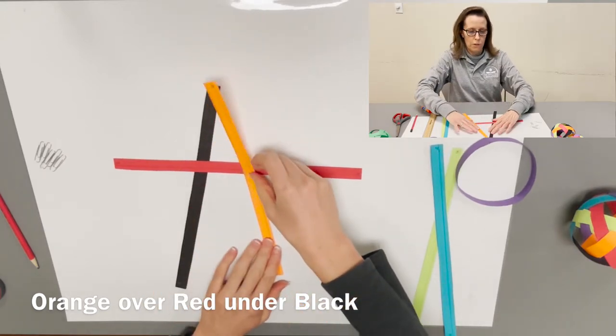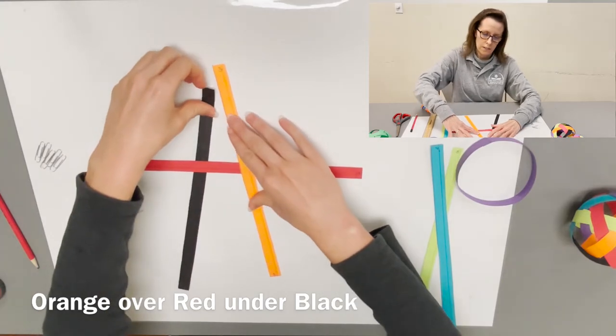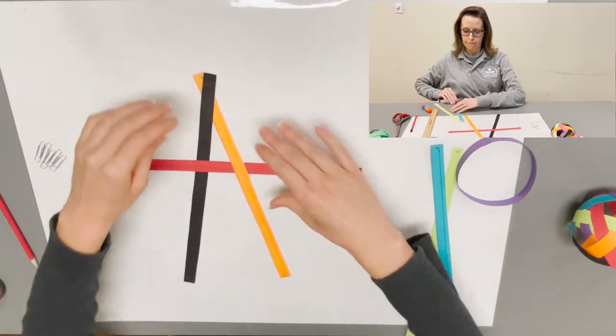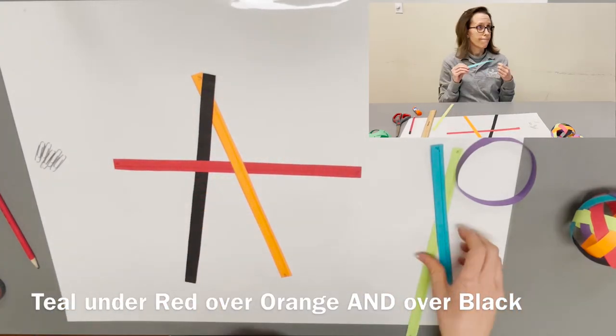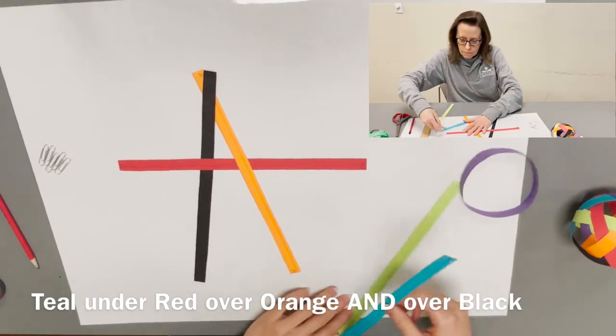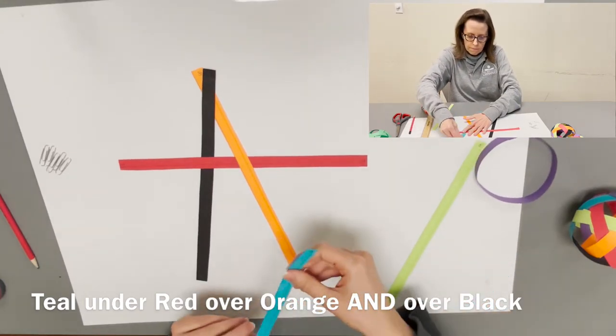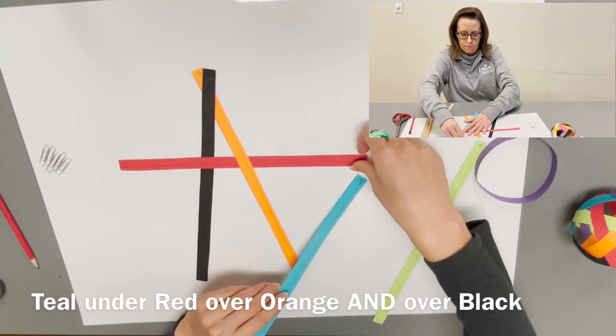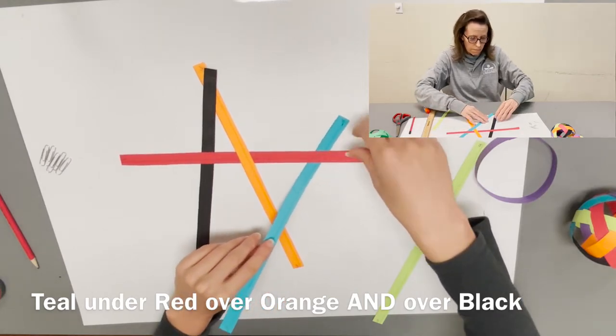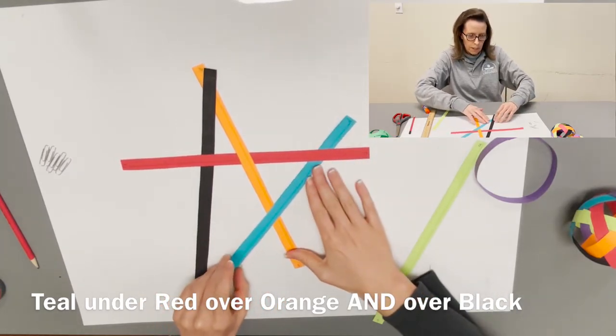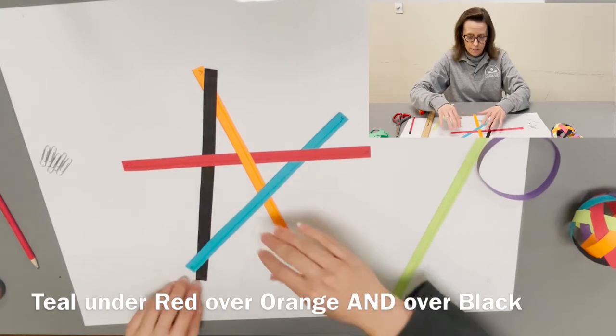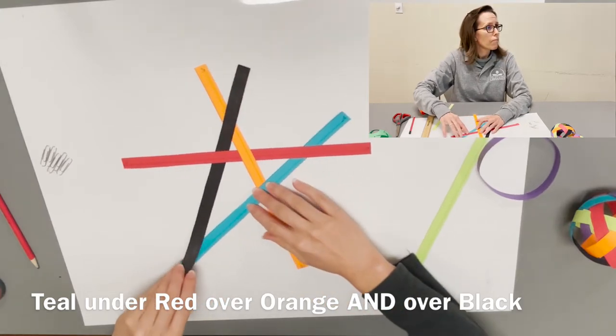Then you take your orange strip and you notice that the red is going over the black, so it's going to go under the orange and that orange will go under the black. Next we're going to take the teal and put it under the red, over the orange, and under the black.